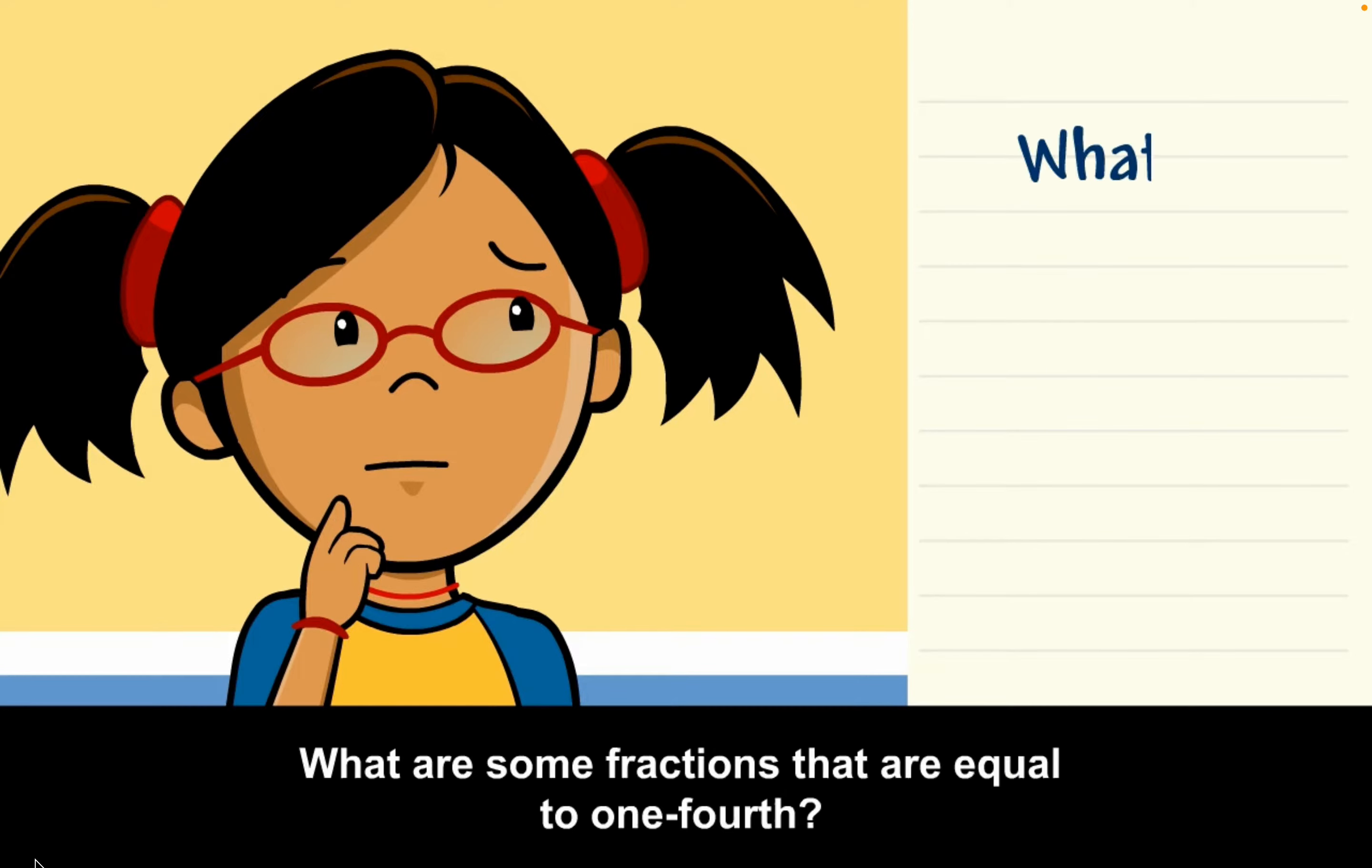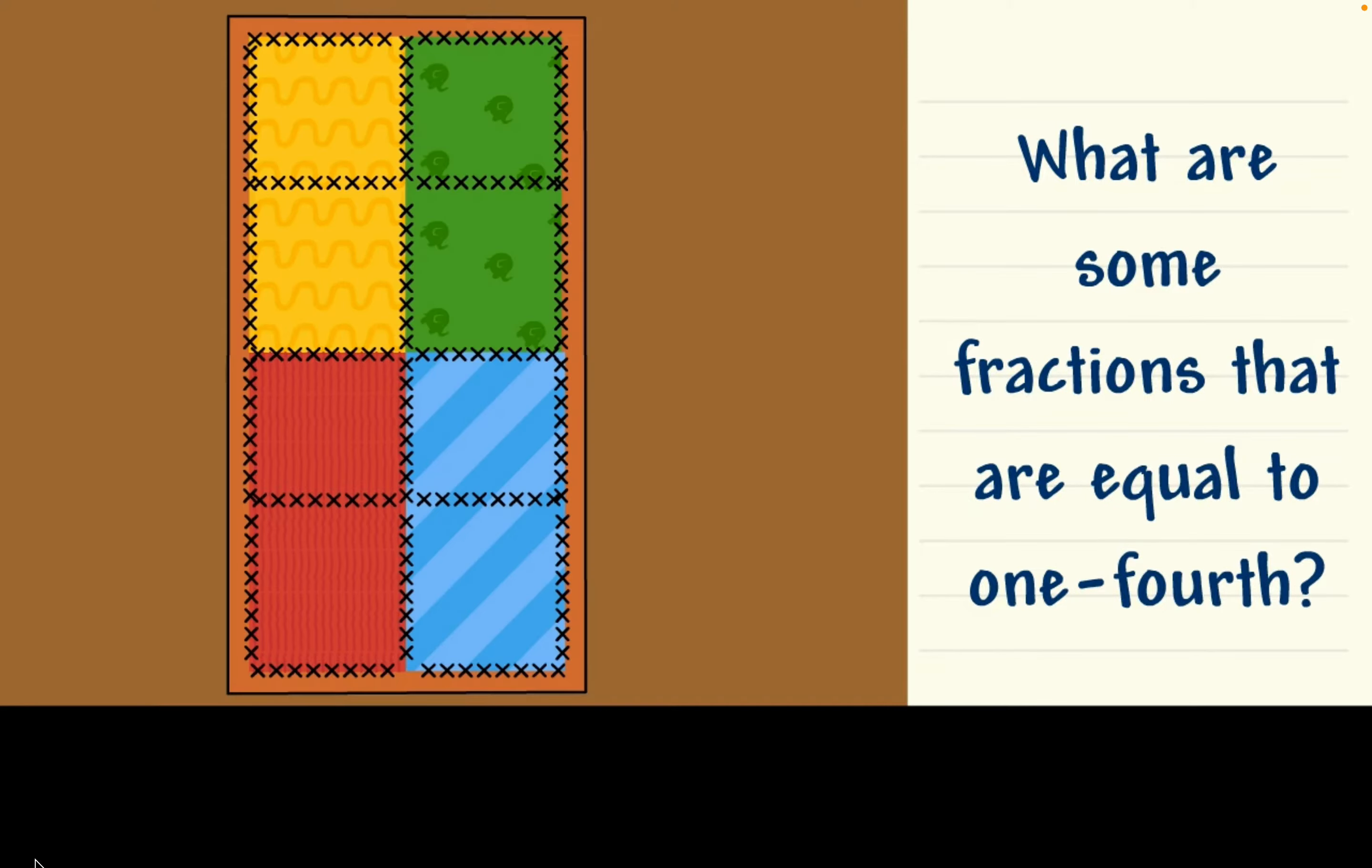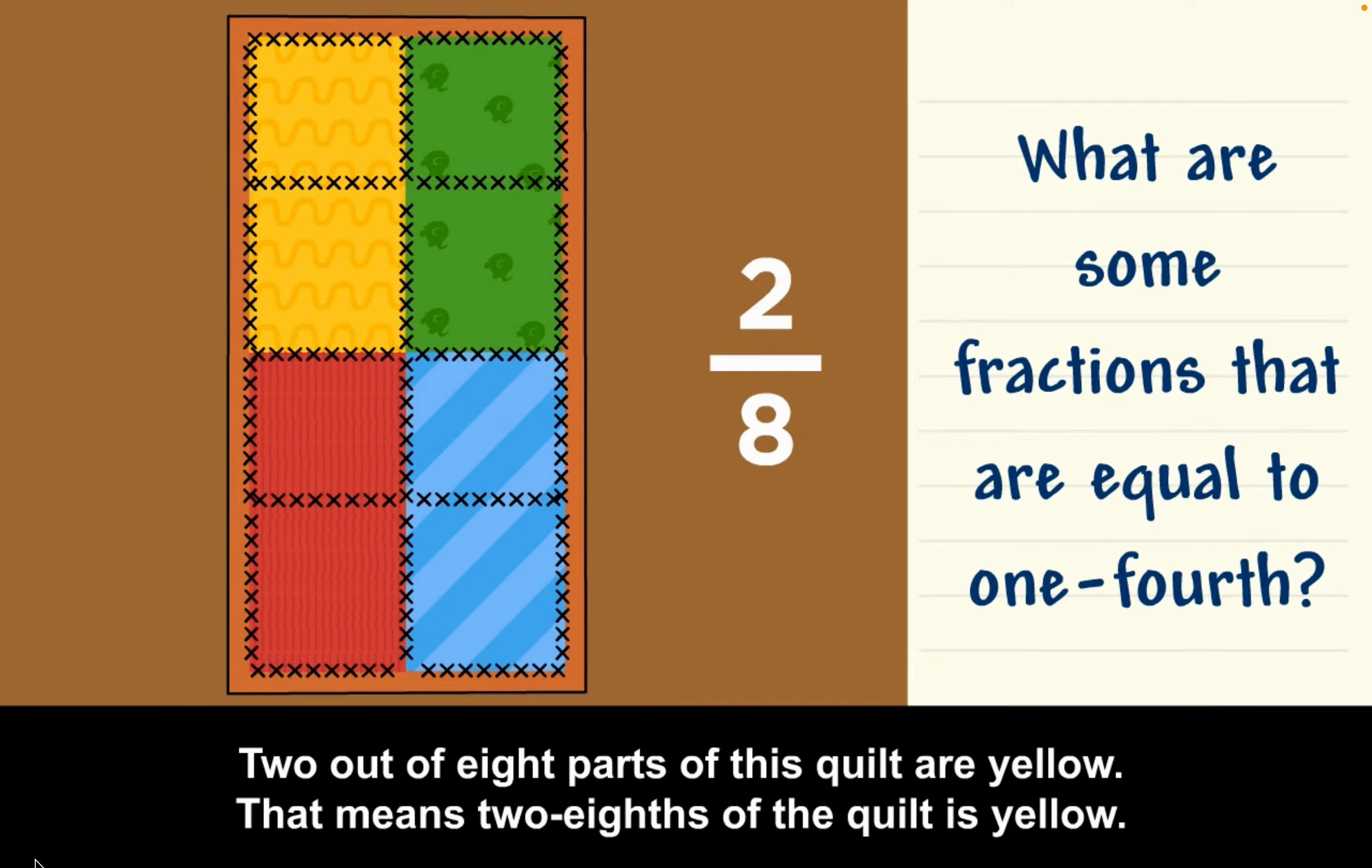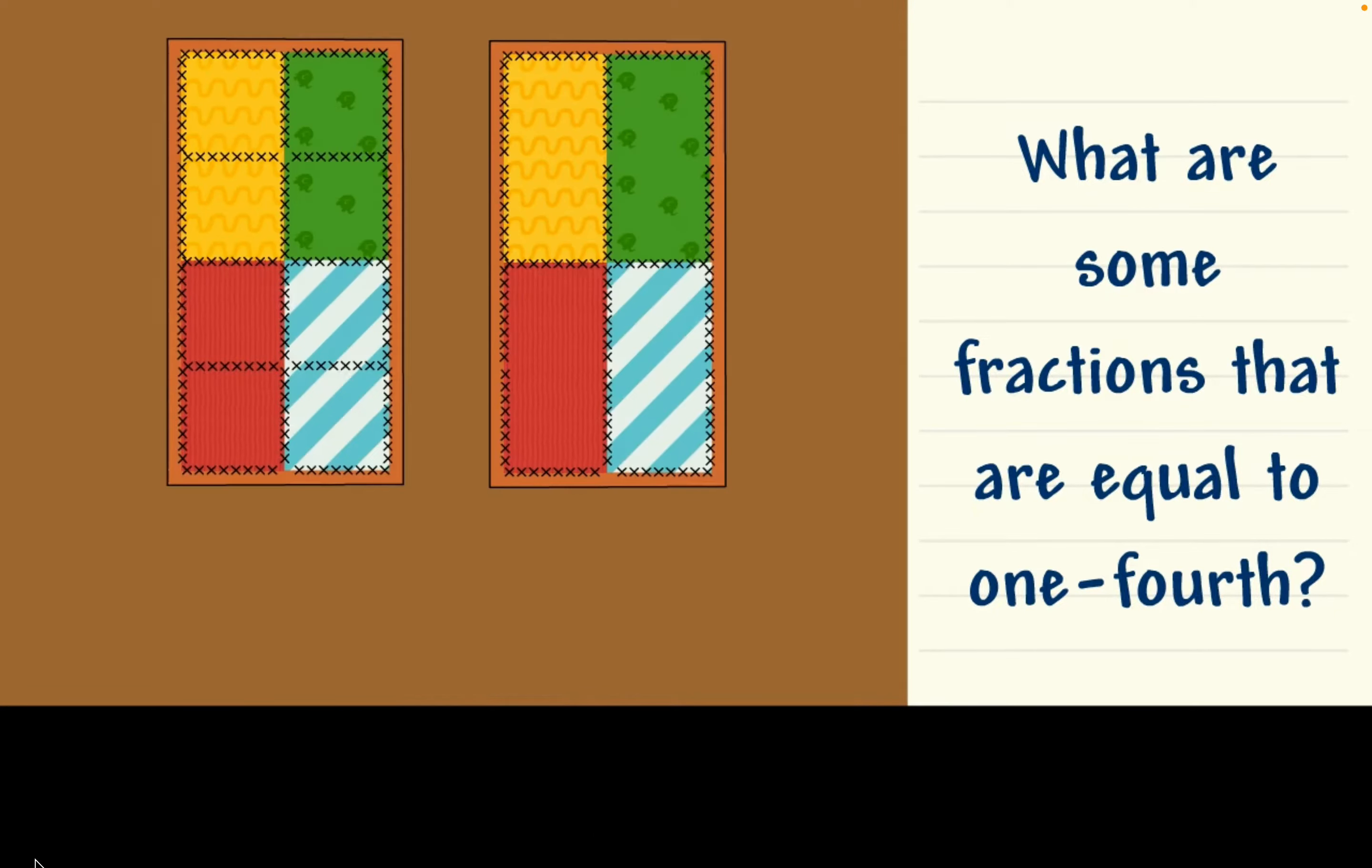What are some fractions that are equal to one-fourth? Two out of eight parts of this quilt are yellow. That means two-eighths of the quilt is yellow. If you look at the quilt a little differently, you can see that one-fourth is yellow. So, two-eighths is equal to one-fourth.